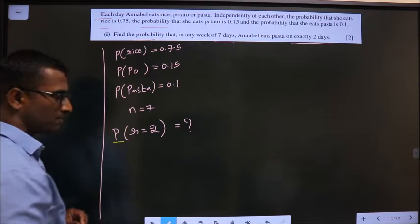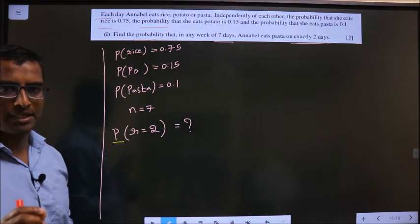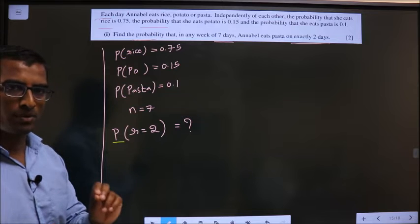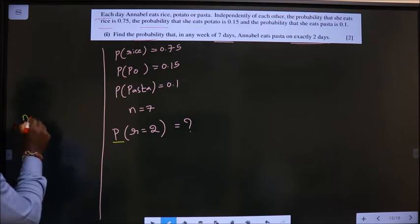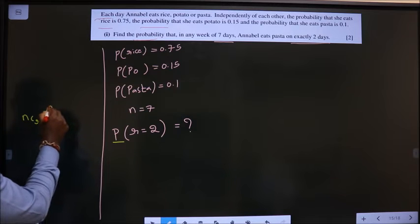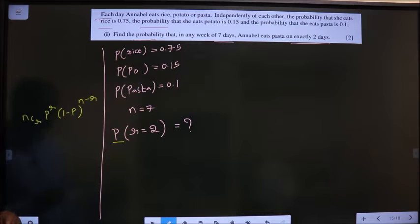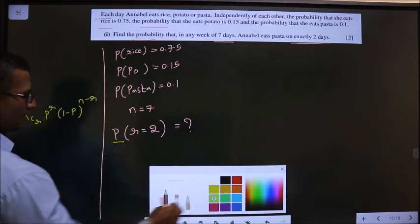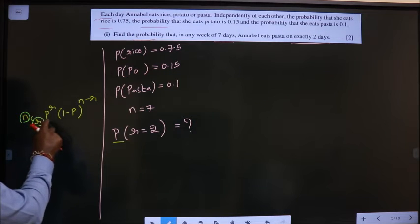To find out this probability, we should get the idea of using binomial distribution. And the formula for binomial distribution is nCr, P power R into 1 minus P power n minus R. Here, we should decide the value for n, R and P.